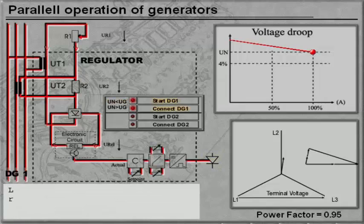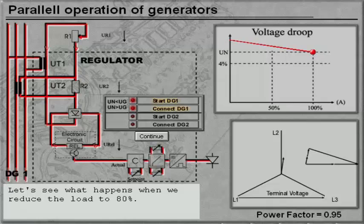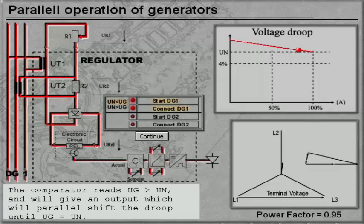Let us see what happens when we reduce the load to 80%. The comparator reads that UG is greater than UN, and will give an output which will parallel shift the droop until UG equals UN.